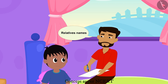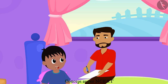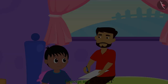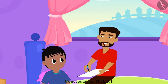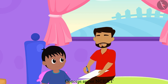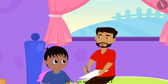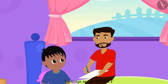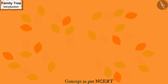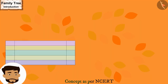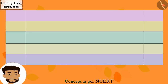Raju wonders about so many people and asks what he should address them as. His father explains that they all have a different relationship with Raju, so he cannot address them all in just one way. His father then starts making the family tree on paper to explain.